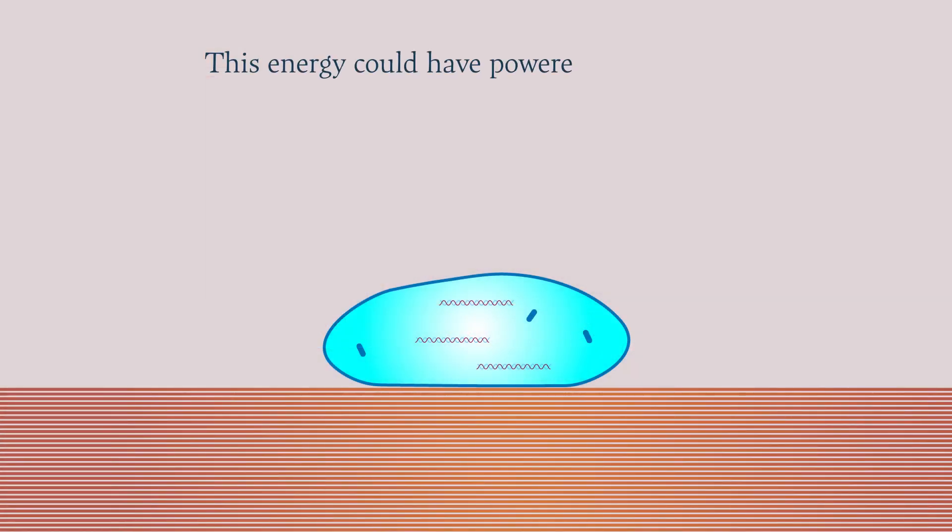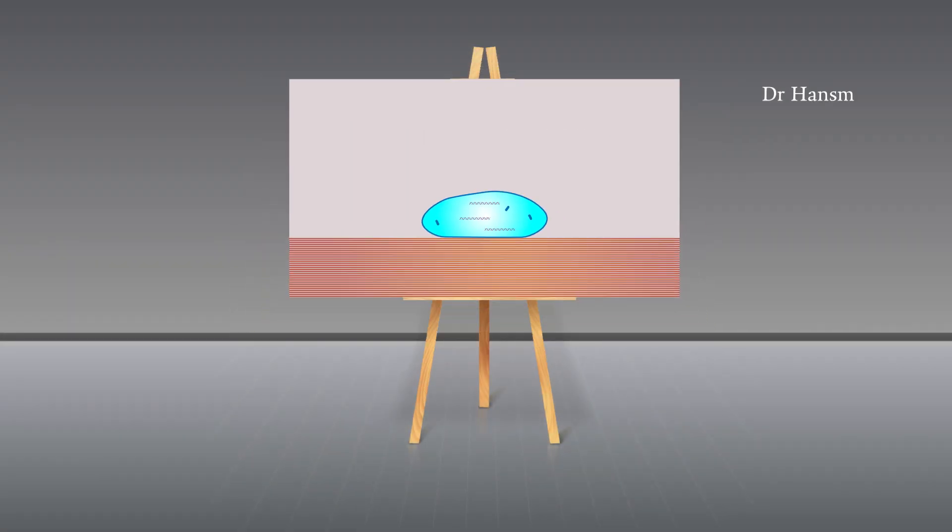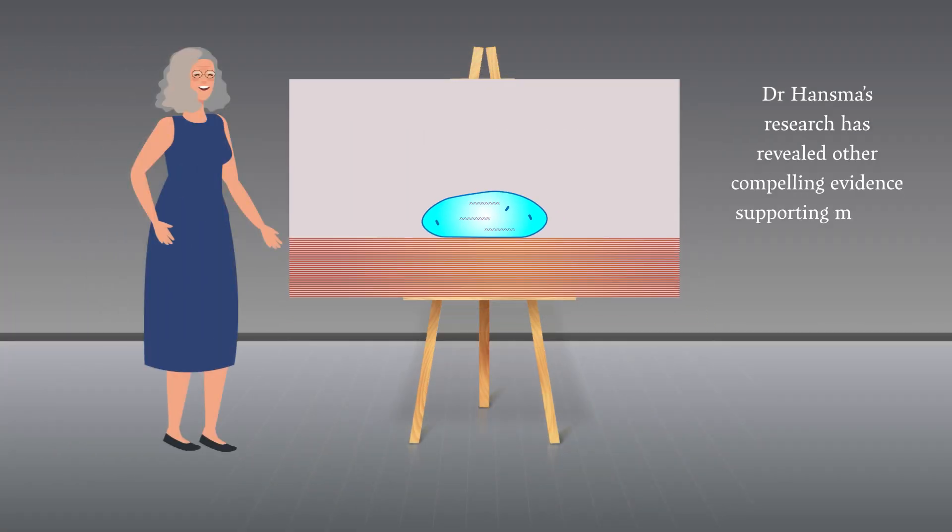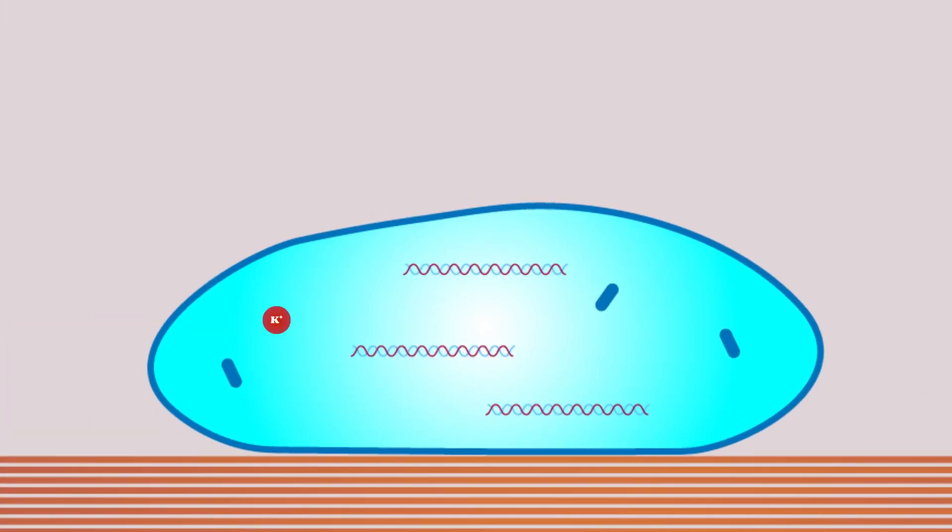This energy could have powered the chemical reactions that gave rise to life. Dr. Hansma's research has revealed other compelling evidence supporting mica as the site of life's emergence. All types of living cells have high concentrations of potassium, the origin of which remains a mystery.